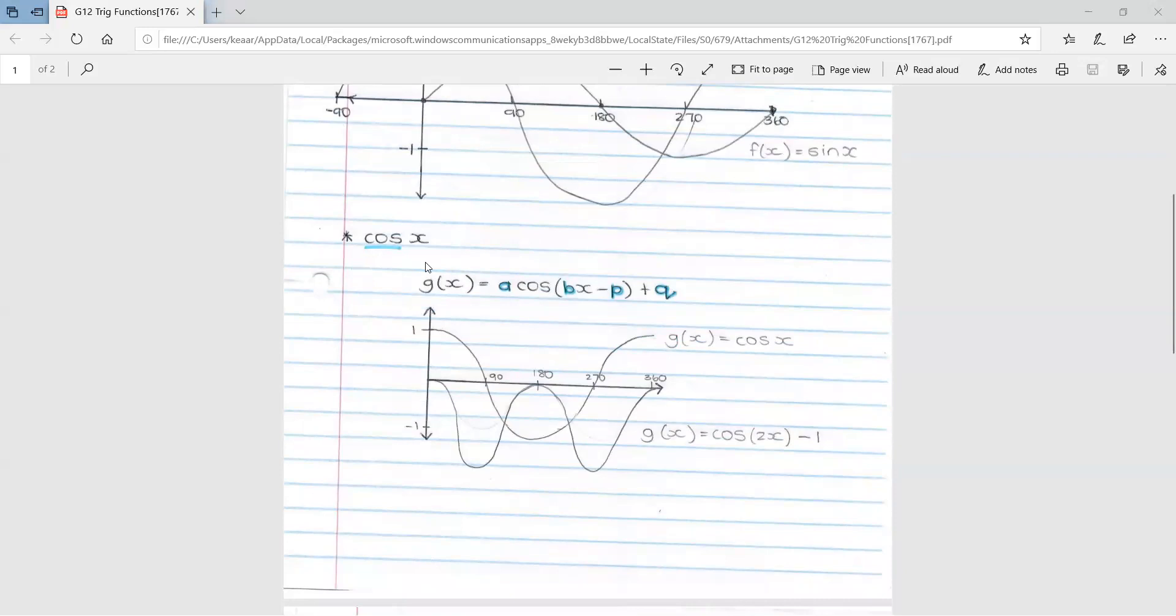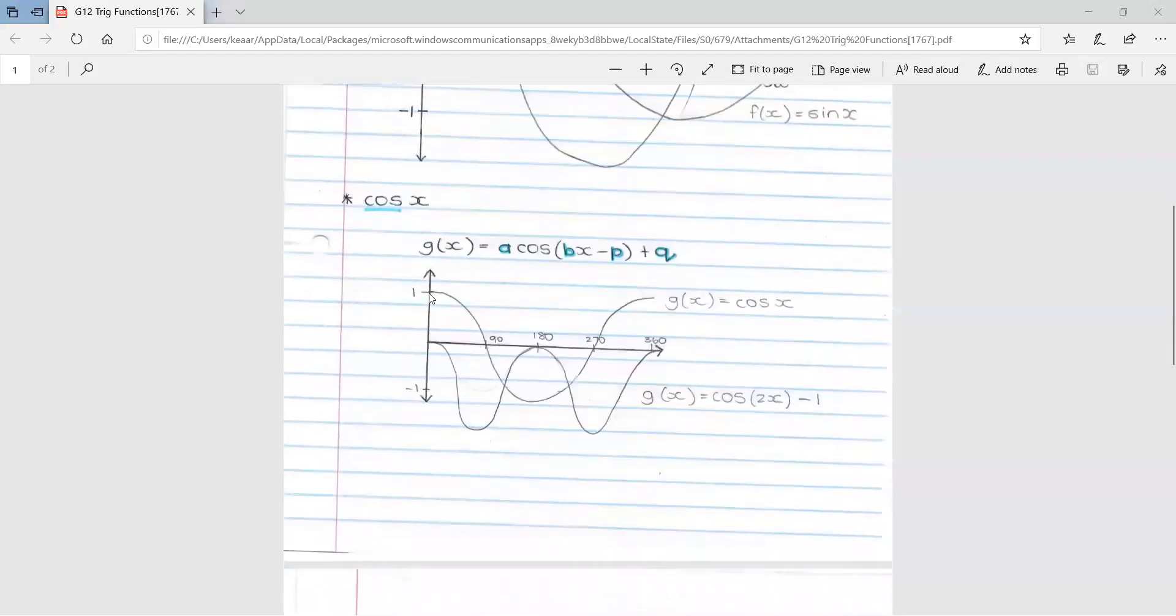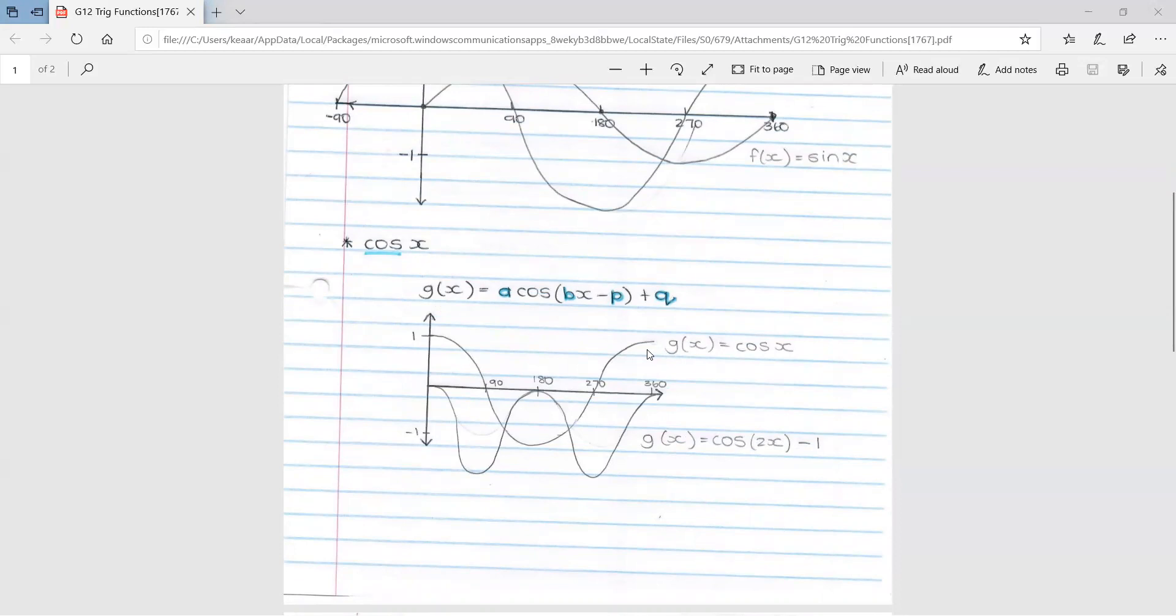The next graph we have is a cos graph. It has a very similar setup: a cos bracket bx minus p close bracket plus q. And they again all represent the same thing as they do in the sin graph. A is still my amplitude, b is still changing the period, p is still my shift left or right, and q is still a shift up and down. If we look here, this is my basic cos graph as I've labeled it. It looks slightly similar to sin except it's just kind of starting somewhere else. So an important way to distinguish it: a general basic sin graph will look more like a snake and a cos graph will look more like a cup. So s for snake for sin and c for cos and cup. That's an easy way to remember it.